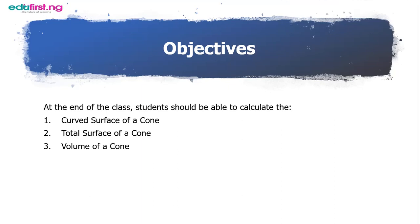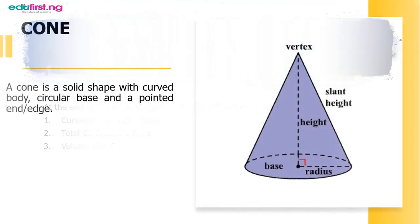So let's make progress. What is a cone? A cone is a solid shape with a curved body, circular base, and a pointed edge. What we mean by a pointed end is now called the vertex.